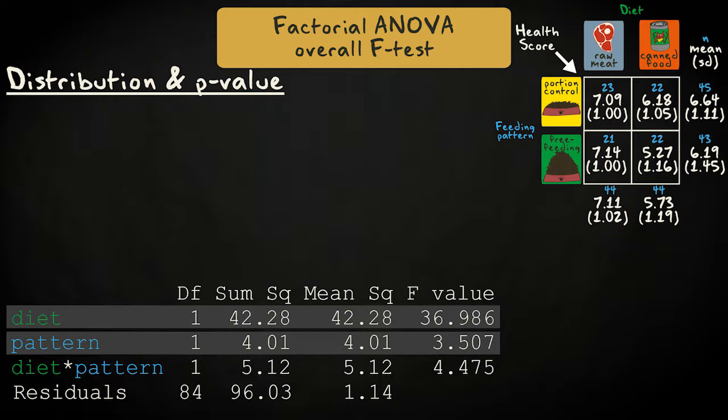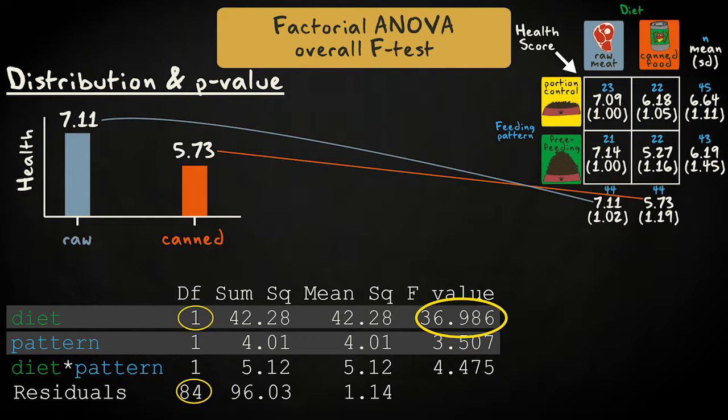We've already compared the groups in a pairwise fashion, so interpretation of the main effects isn't really necessary, but let's look at them anyway. For the factor diet, we find an F of 36.986 with 1 and 84 degrees of freedom. A very high value, which is due to the fact that I generated the data myself.